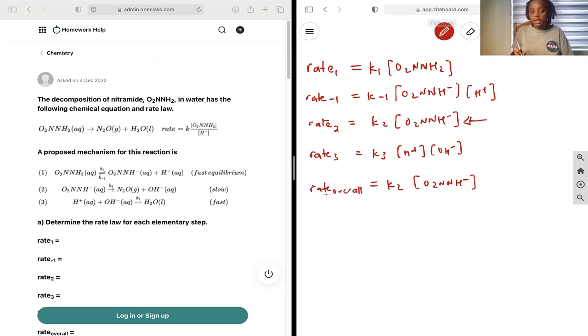But the problem with this answer, and the reason why it does not look like the rate that's given in the equation, is because this is an intermediate.